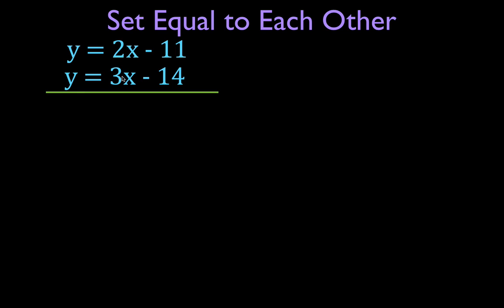I like to write down the first equation, then the second equation, draw a line under them and think: what do I need to do to set these equal to each other? I need to solve both equations for the same variable. In this relatively simple example, both equations are already solved for y. That means if 2x minus 11 equals y and 3x minus 14 also equals y, then 2x minus 11 is equal to 3x minus 14.